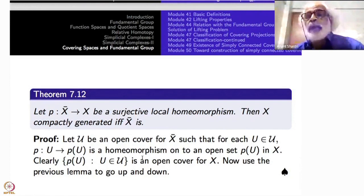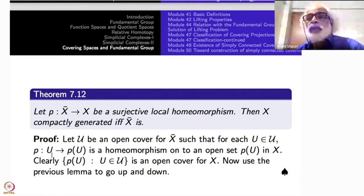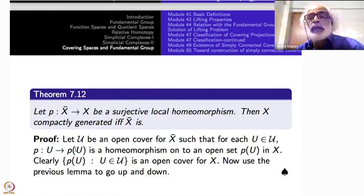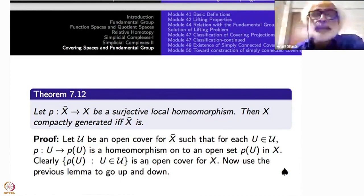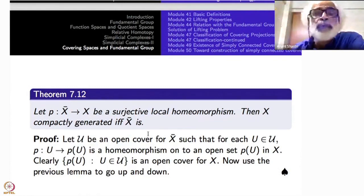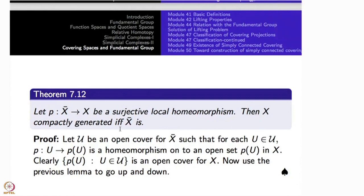So you just need a surjective local homeomorphism — of course it must cover the whole space. A surjective local homeomorphism is good enough to transfer compactly generatedness in both directions.